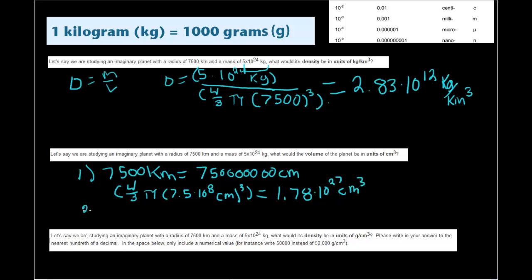And the other way to attack this problem is to actually compute the volume as we did up here with kilometers. So it would be 4/3rds pi, 7,500 kilometers cubed. And then take whatever the answer that is and then convert it to centimeters cubed, which is a little bit more difficult because then you're having to use the powers of the cubic measurements and I believe it's a 10 to the 15th unit conversion there.